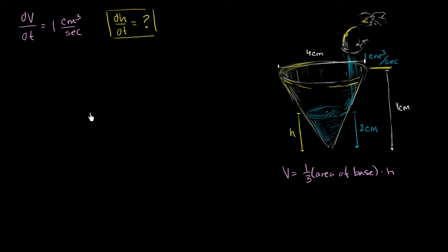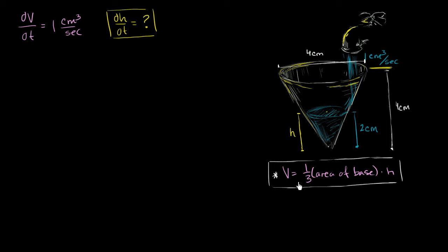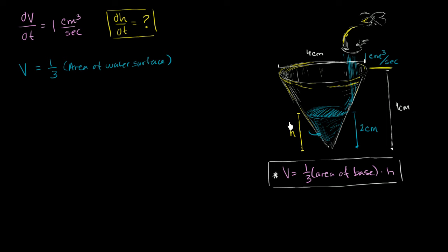Let's do this step by step. Can we find a relationship between volume and height at any given moment? We have the formula for the volume of a cone: V = (1/3) × (area of the base) × height. So the volume of water equals (1/3) times the area of the water surface times h.